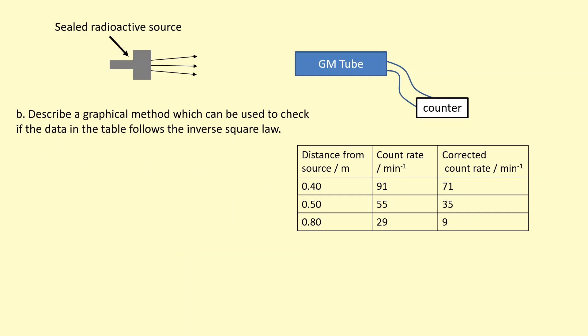Describe a graphical method which can be used to check if the data in the table follows the inverse square law. Graphical method here means drawing a graph. The best type of graph to plot in physics is a straight line. So I'm going to write the equation of a line, y = mx + c. I'm going to rearrange my inverse square law to a slightly easier form like this, I'll just separate that k like that.